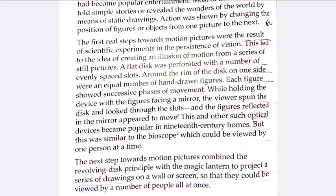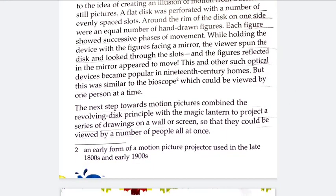But the bioscope could be viewed by only a single person, so it had its limitations. The next step towards motion picture combined the revolving disc principle with the magic lantern to project a series of drawings on a wall or screen so that they could be viewed by a number of people all at once. Pictures placed one after another were projected on the wall with the help of a lantern's light, and many people could together watch these pictures. That was the motion picture of that time.